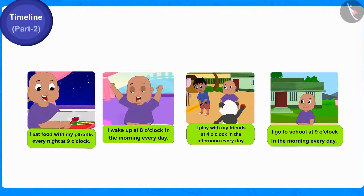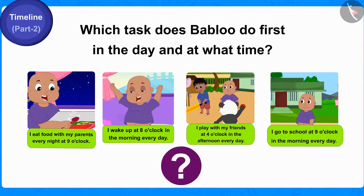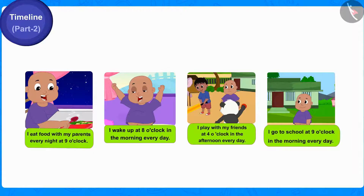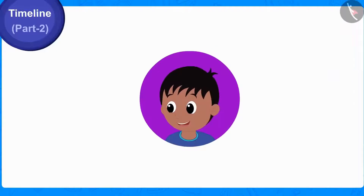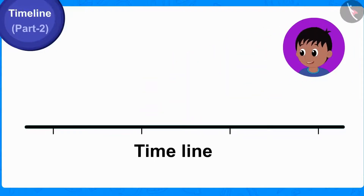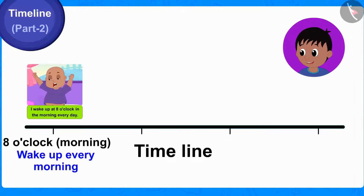Children, can you tell out of these 4 tasks which task does Babalu do first in the day and at what time? Well done children, you have found the right answer. Babalu wakes up every day at 8 o'clock in the morning. Raju drew a timeline in Babalu's diary and wrote 8 o'clock in the morning as the very first task. He told Babalu that he can write 'Wake up every morning' under this, or if he wants, he can also draw a picture for it.